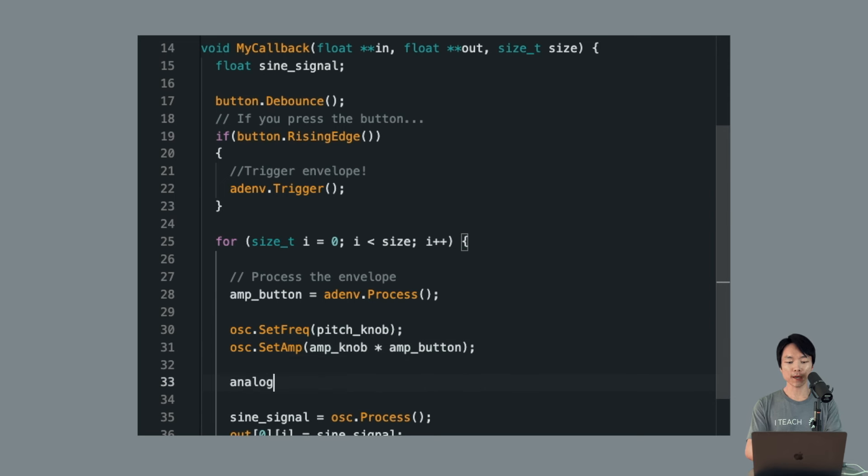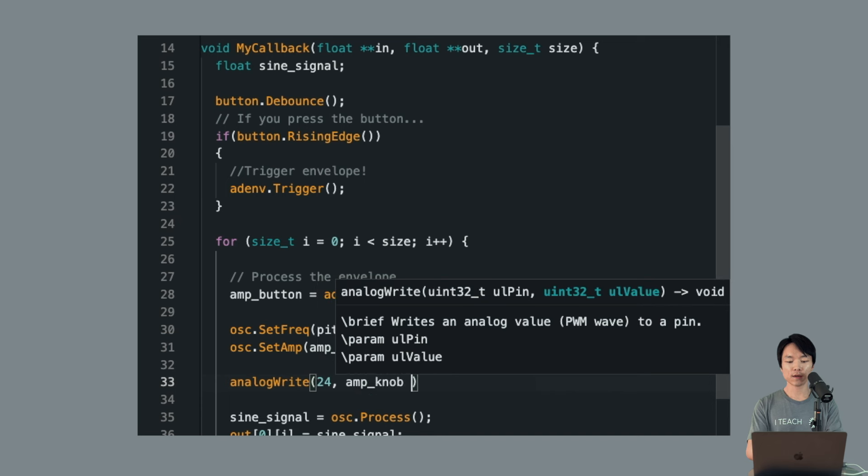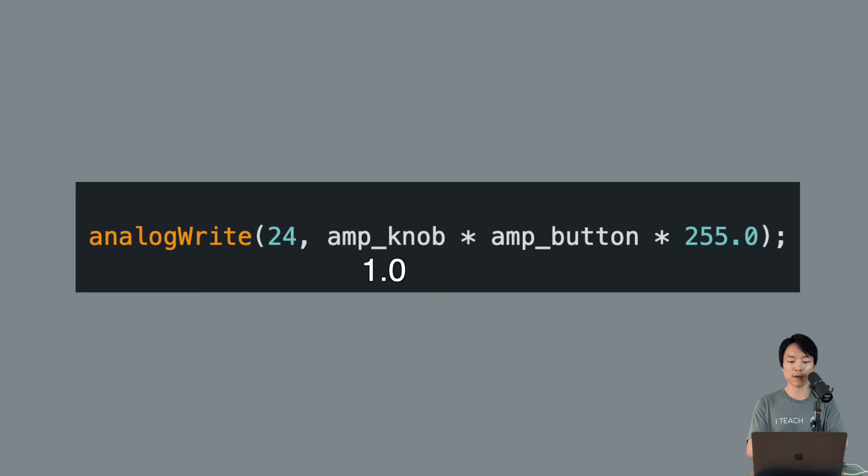We only need to add one line of code actually. Inside of the for loop in my callback, we add analogWrite 24 Amp knob times amp button times 255.0. With the amp knob twisted all the way up to 1.0, and as the attack envelope ramps up towards the maximum value of 1.0, the LED will increase towards full brightness since 1 times 1 times 255.0 is 255.0. And when the decay envelope is ramping down towards 0.0, the LED will decrease in brightness.